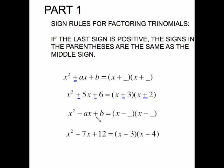In this case, this last sign is positive, which tells me my signs will be the same, and they will be the same as whatever that sign is. That's why both signs in the parentheses are negative. Example down here, that's a positive 12. This middle sign is negative, therefore both of these are negative.